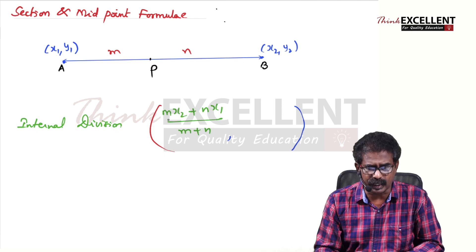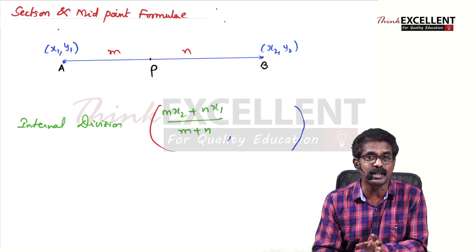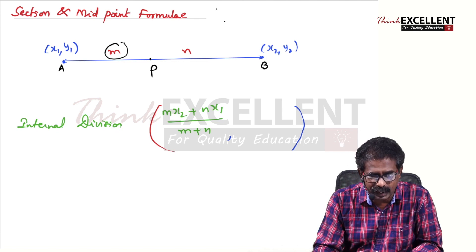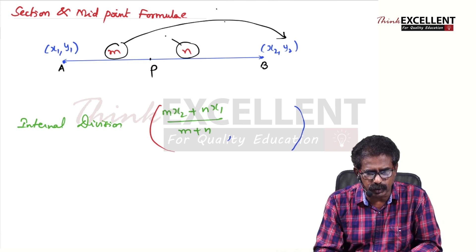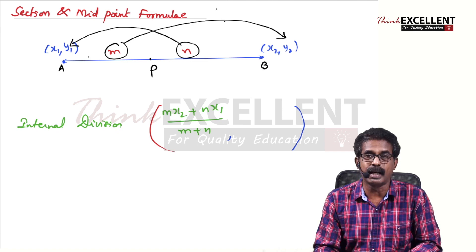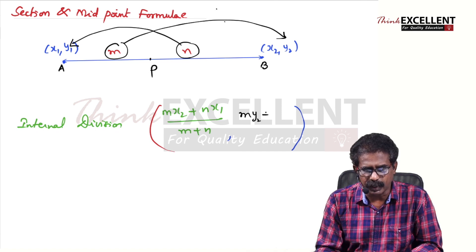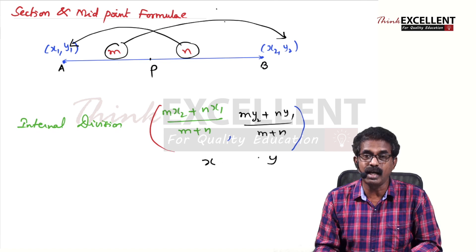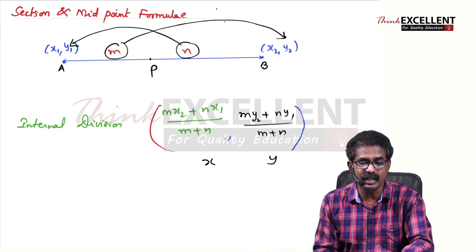Same way you can write the Y coordinate also. For Y coordinate, same thing but you take Y values. So M into Y2 plus N into Y1 divided by M plus N. So this is the X coordinate and this is the Y coordinate. That's all for the section formula for internal division.